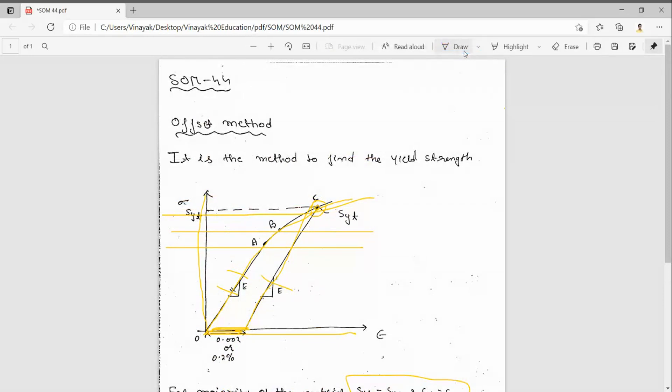So in this way we can find the yield strength of the material if it is not given. This is the offset method. Thanks for watching this video.